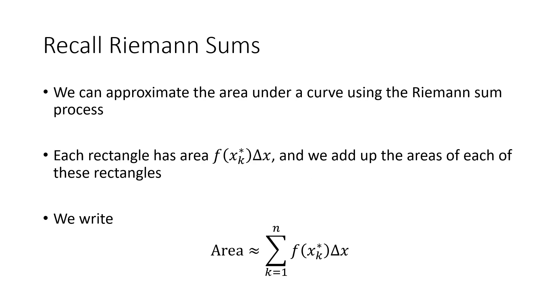Recall that we talked about Riemann sums, which is a way to approximate the area under a curve by using a bunch of rectangles. Each of those rectangles has area f of xk star times delta x. f of xk star here was the height of that rectangle and delta x was the base of that rectangle.